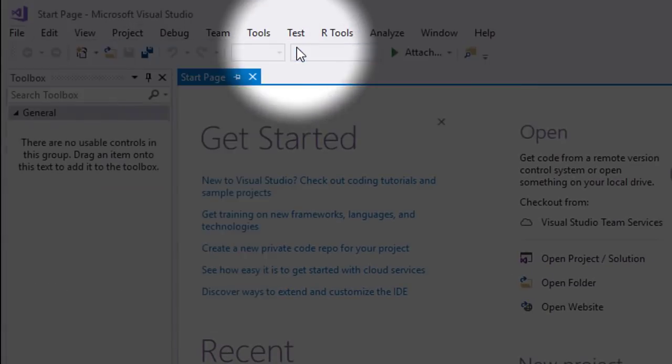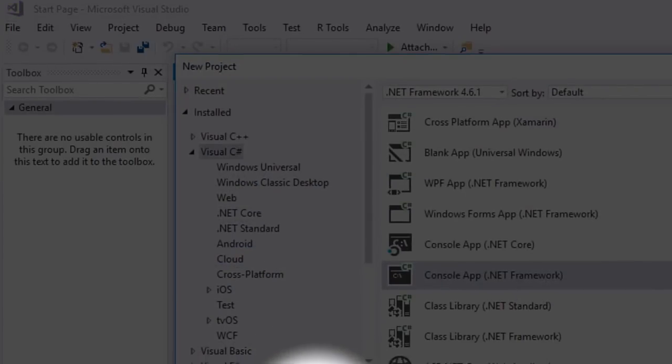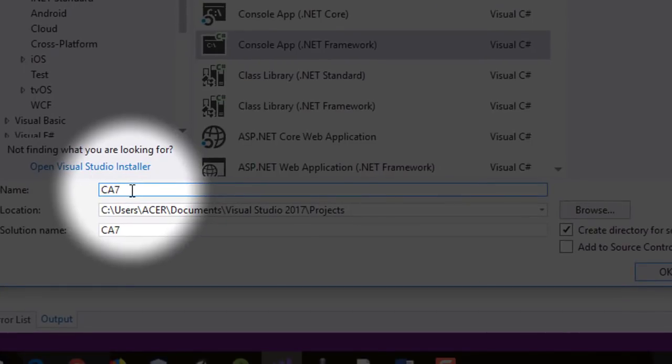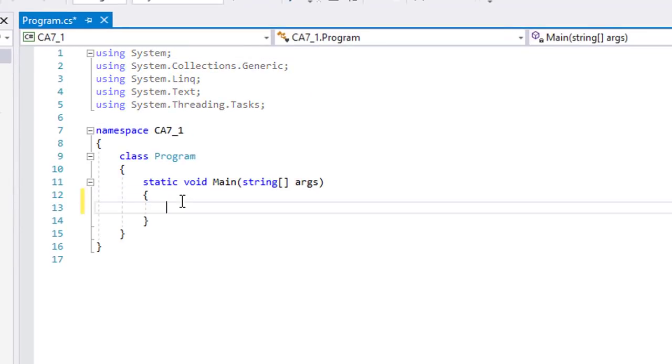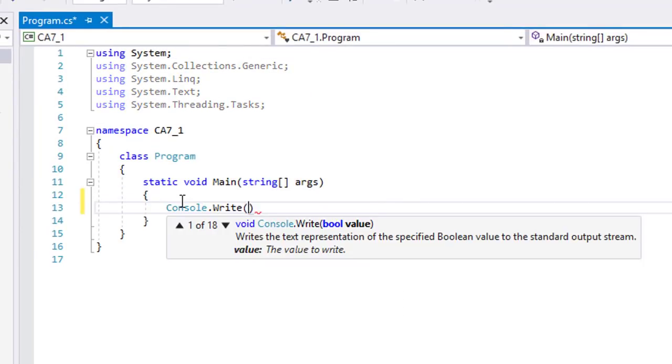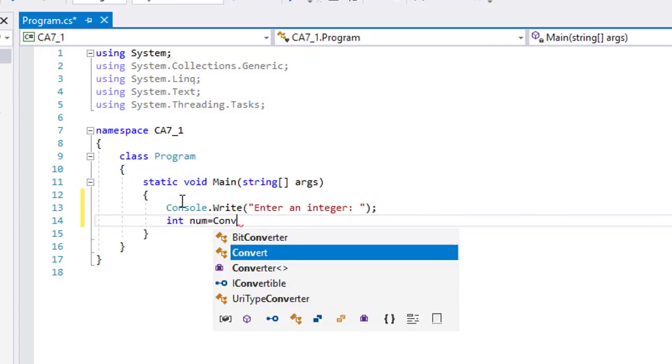Let's create a new project and name it ca7 underscore one. Since we know that our loop will always be from one to ten, we will use a for statement. Let's ask for the integer.